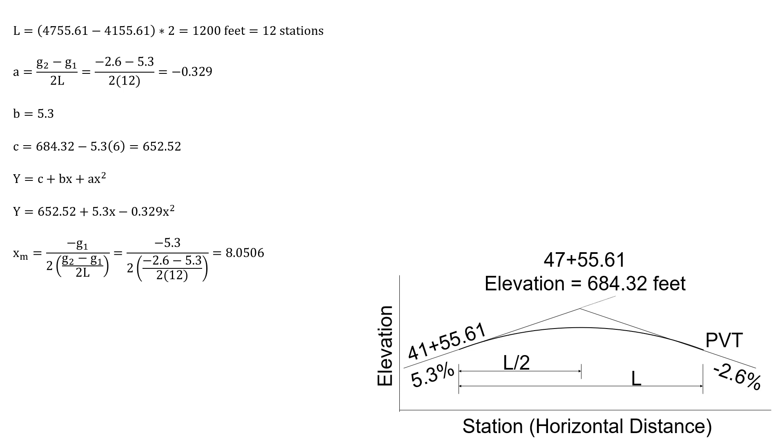We need to find for that high point, so X sub m is negative G1 over 2 times G2 minus G1 over 2 times L. I shared a separate value there where we can cancel out those twos. You can use it this way as well. Solving for this, X sub m is 8.0506.